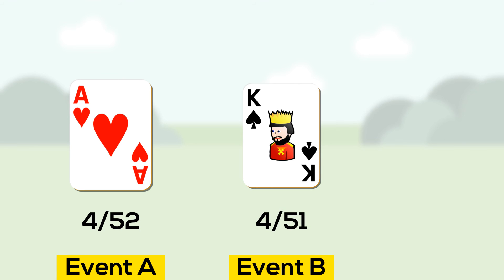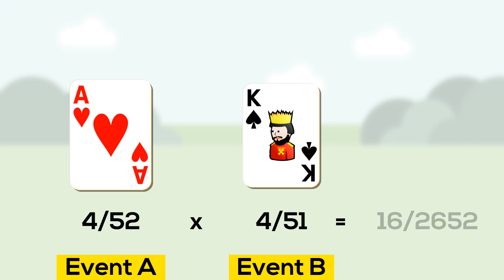We multiply these two probabilities together and get a probability of 16 out of 2,652 — about a 1 in 167 chance.